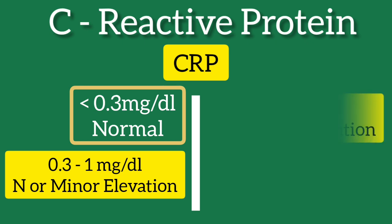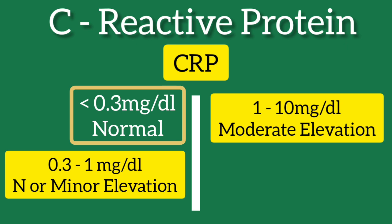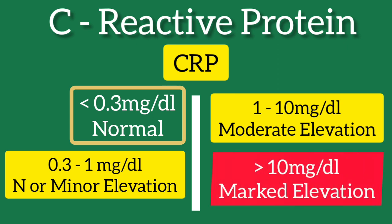Levels between 1 to 10 mg per deciliter indicate moderate elevation, such as in systemic inflammations like rheumatoid arthritis, SLE, other autoimmune diseases or malignancies, myocardial infarction, pancreatitis, or bronchitis. Levels more than 10 mg per deciliter are considered marked elevation, which can be seen in acute bacterial infections, viral infections including coronavirus infection, systemic vasculitis, and major trauma.